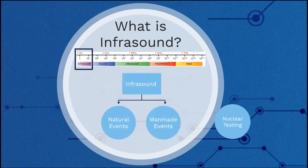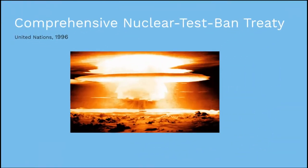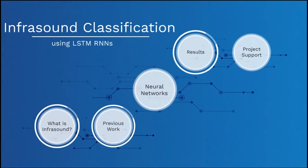Infrasound can be created by natural events like earthquakes, as well as man-made events like mine blasts. In 1996, the United Nations adopted an agreement to ban all nuclear explosions, so we would like to be able to detect if nuclear weapons are being tested. Infrasound classification is a great approach to this problem since data is already being collected.